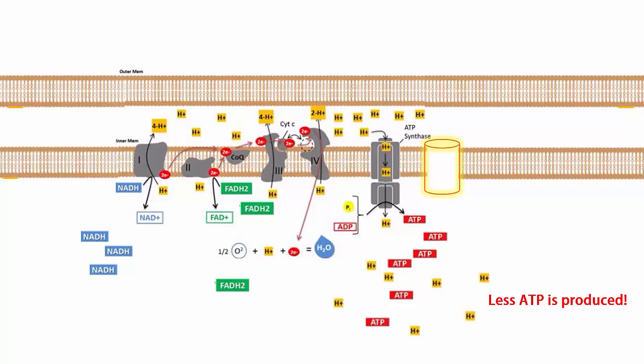So that ATP is going to come from getting more electron transport carriers, which are our NADH and our FADH2. Now if you remember how these electron carriers come about, they come about through the process of glycolysis and aerobic respiration.